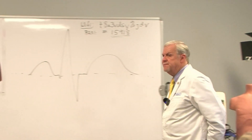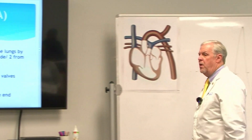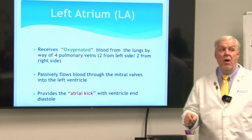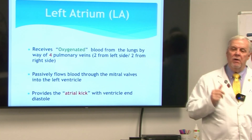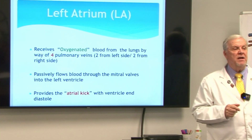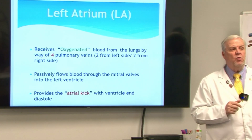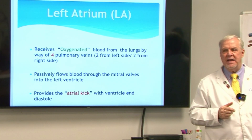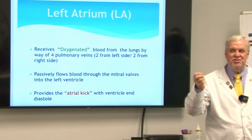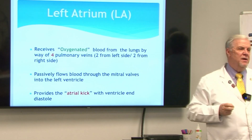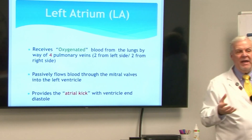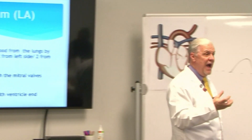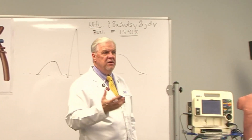The atrial kick is going to be part of what we need to identify when looking at an ECG — specifically where it might be missing. One of the most common rhythms where atrial kick is lost is AFib, because the atrium is quivering. The atrial kick is the ability for the atrium to contract and provide an additional 15%, give or take a percentage or two, of blood to the ventricles.